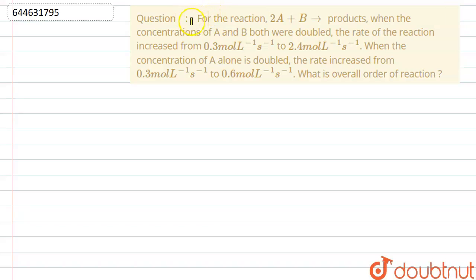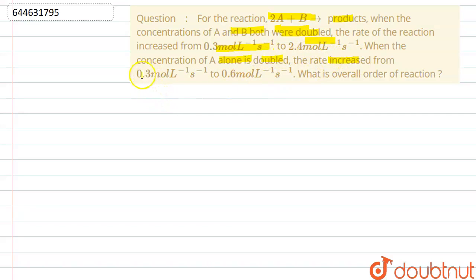Hello guys, our today's question is: for the reaction 2A plus B forming a product, when the concentration of A and B both were doubled, the rate of reaction increased from 0.3 mol per liter per second to 2.4 mol per liter per second. When the concentration of A alone is doubled, the rate increased from 0.3 mol per liter per second to 0.6 mol per liter per second. We have to find what is the overall order of this reaction.